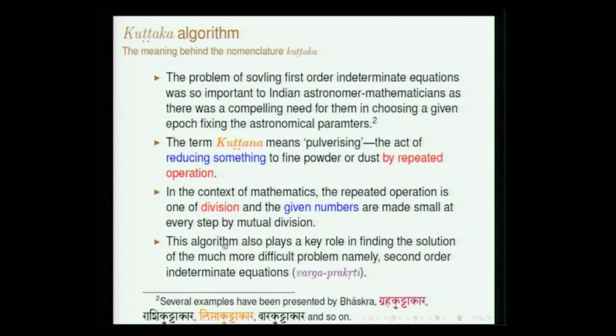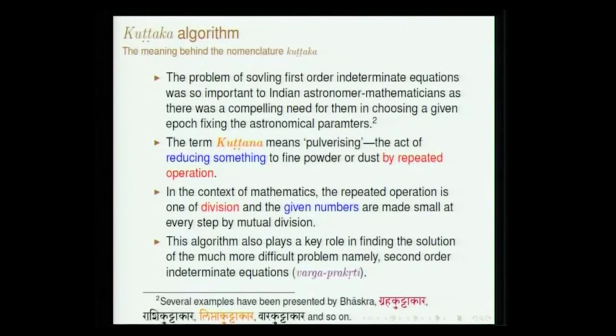This algorithm also plays a key role in solving Varga Prakriti, which will be discussed later when we cover Brahmagrupta — also touched upon by Professor Srinivas. This Kuttakara occurs in various contexts, so Bhaskara classifies it as Graha Kuttakara, Rashi Kuttakara, Lipta Kuttakara, Vara Kuttakara and so on. If it arises in the context of revolution numbers of planets, you call it Graha Kuttakara.